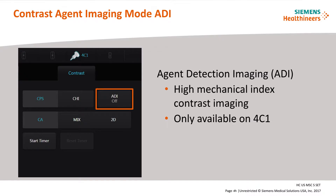There is an additional contrast imaging technique only available on the 4C1 transducer: Agent Detection Imaging, or ADDA. ADDA is a high mechanical index (MI) imaging technique that uses the emission properties of contrast agents to characterize their presence or absence in tissue. ADDA has been used for pre-arterial and late phase radiology imaging applications and to detect early phase vascular structures or lesions; however, the contrast agent it was designed for is not currently available on the market.